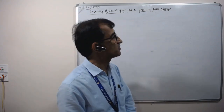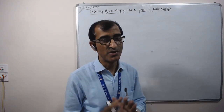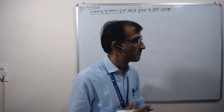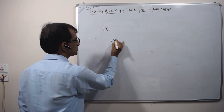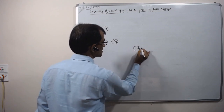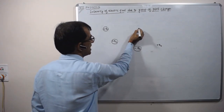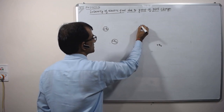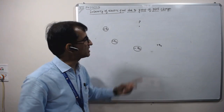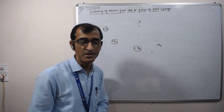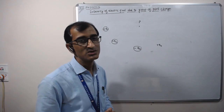Next topic: the intensity of electric field due to a group of point charges. That is, find out the electric field at a given point in space produced by two or more charges. Let us consider a lot of point charges: q1, plus q2, minus q3, and plus qn. Then find out the resultant electric field at a given point P in space due to all these charges. Each charge produces its intensity at point P. The intensity at P due to all these charges will be equal to the vector sum, analogous to the principle of superposition.